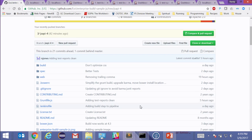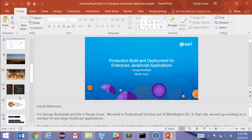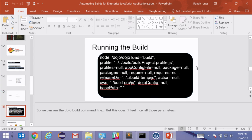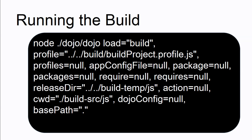Now that we have Bower installed and our Dojo package file ready, we're ready to run the build. But running it directly from node on the command line isn't pretty — this is just not a nice way to do it. It's also very difficult to integrate this command into any sort of build automation, pipelining, or just running things locally on your computer. So let's talk about a better way.